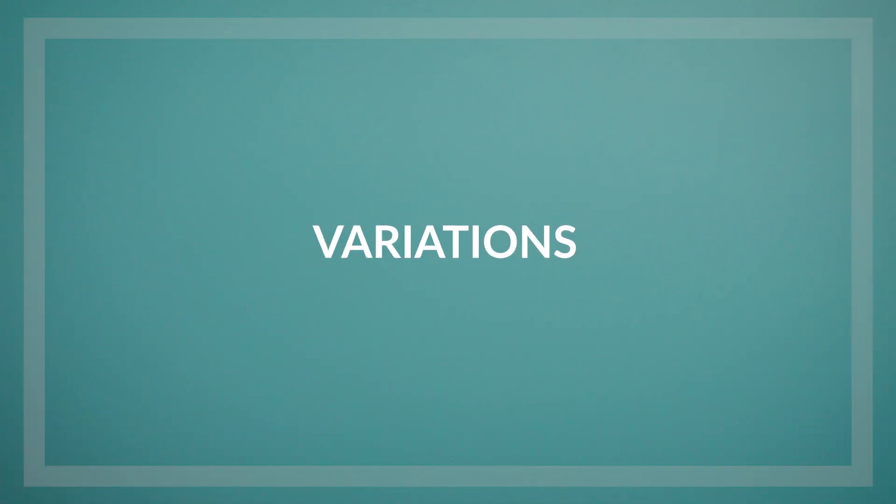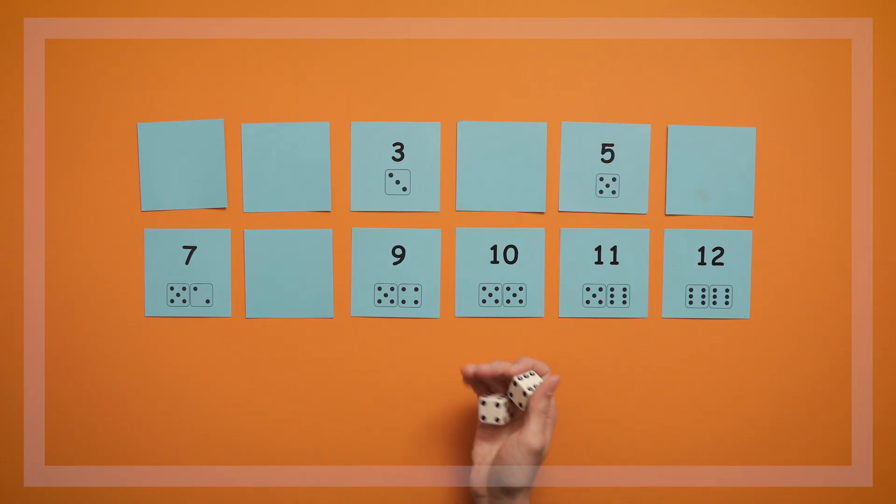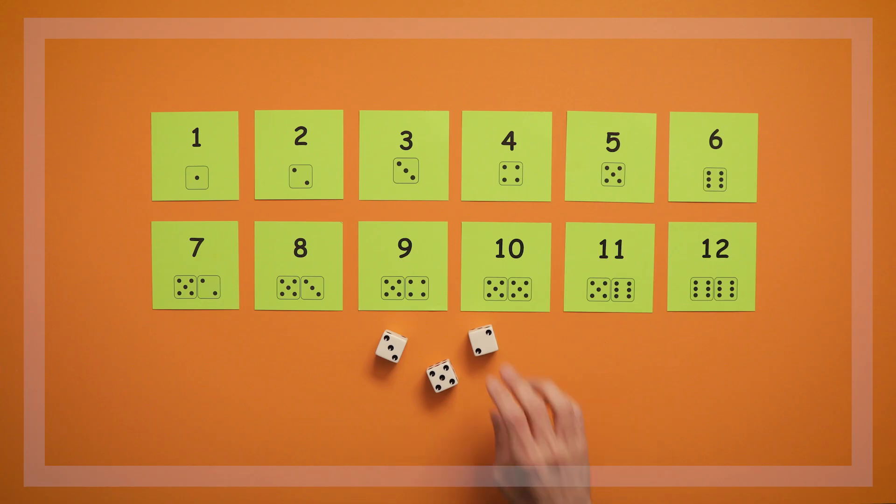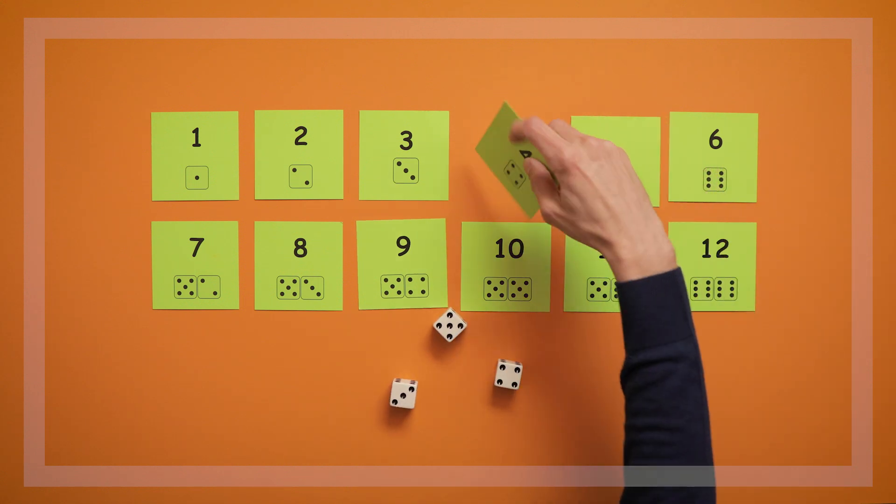There are also a few variations that can make this game even more fun. One is you can play that rolling doubles is a wild roll that lets you turn over any card. You can also play this game with a third die, which gives you more combinations to think about and more ways to combine rolls to make these numbers.